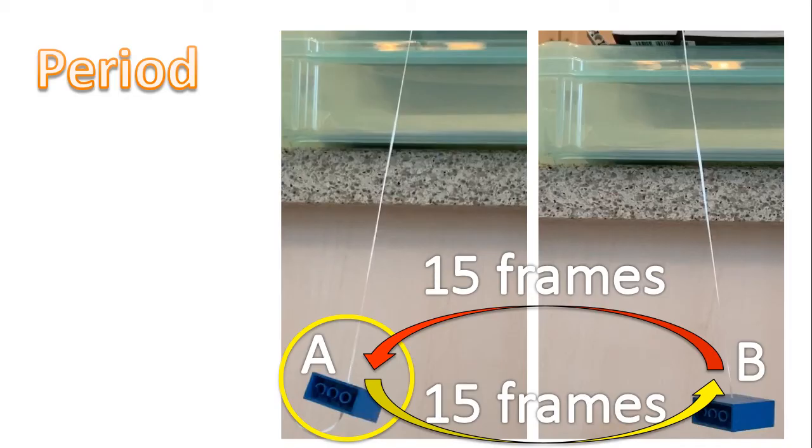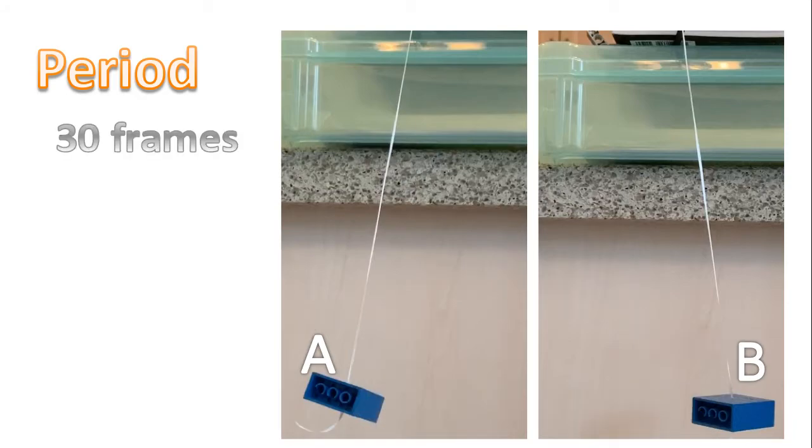From the video you just watched of me counting frames, to go from position A to B, it took 15 frames. And then to go back from B to A, it took another 15 frames, or altogether 30 frames for one cycle of motion.